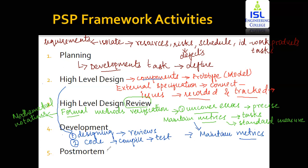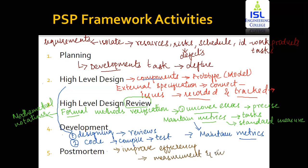The last framework activity is postmortem. This postmortem focuses on improving the efficiency of the particular product. Suppose you've designed software achieving 91% performance — how do you improve it to 98% or 99%? The efficiency is improved by following all the measurements and metrics that you maintained within the previous steps. By using all those measurements and metrics, you identify whether the software you're developing is effective, and then based on that you improve the efficiency of the particular product.